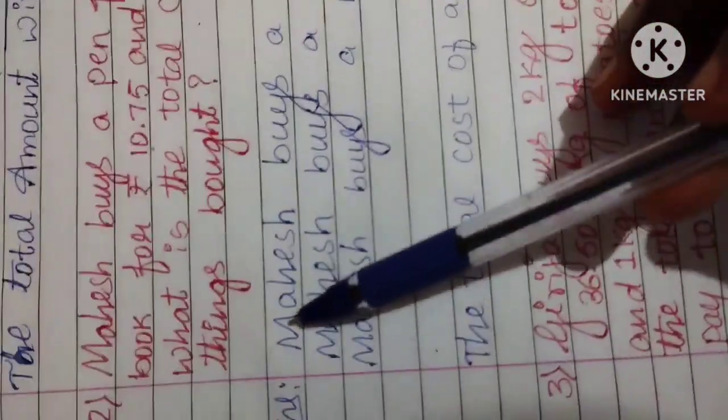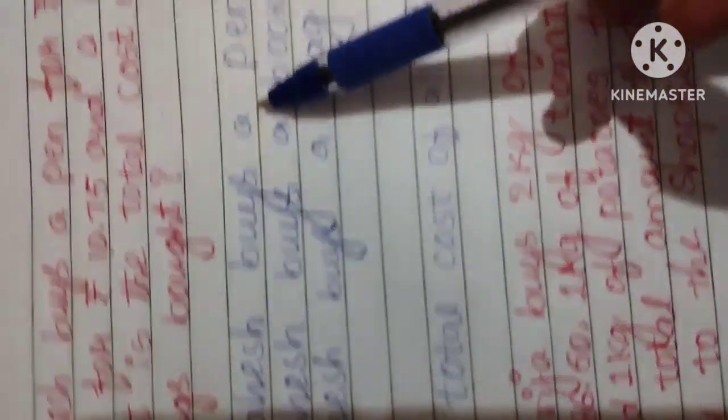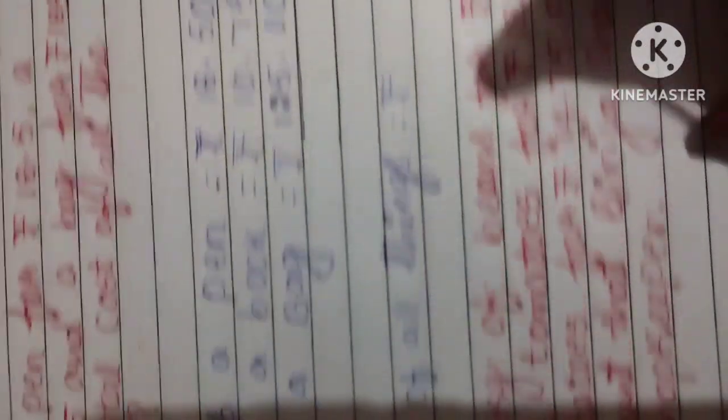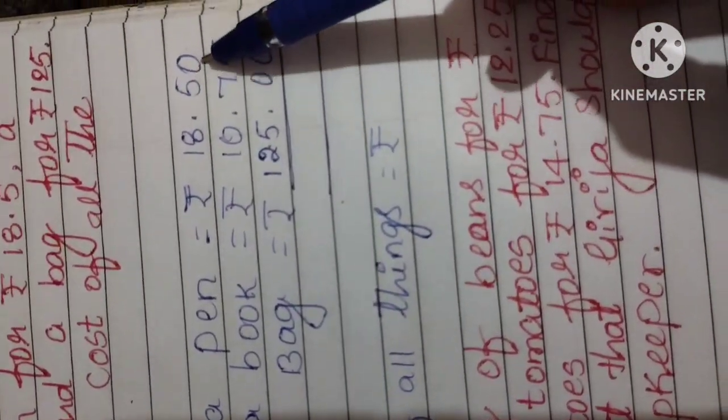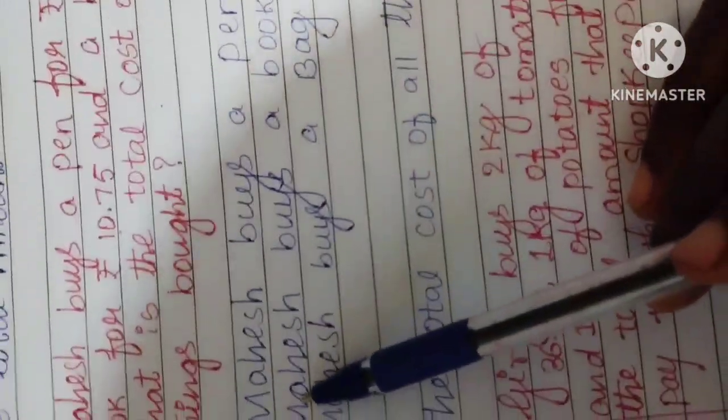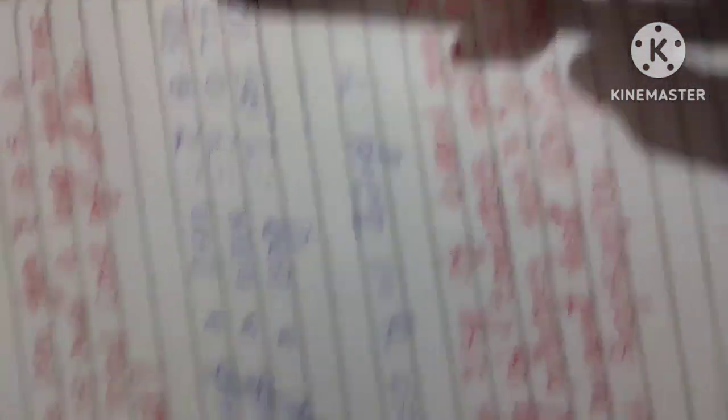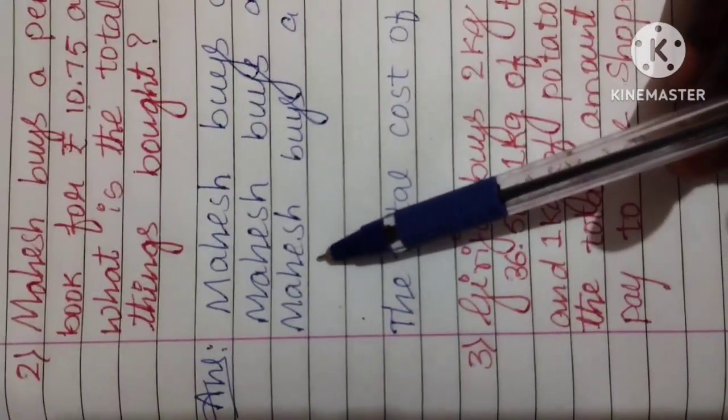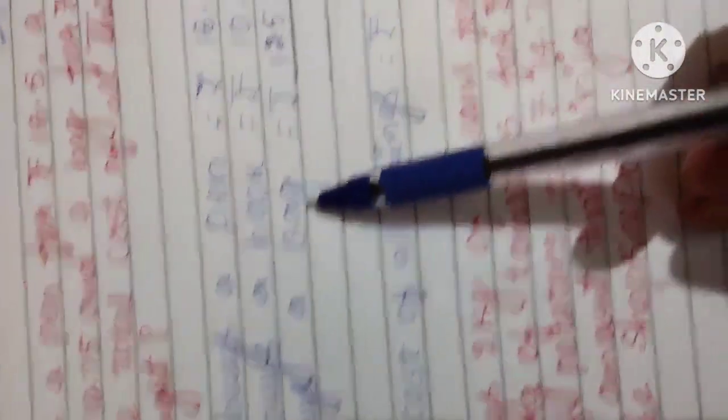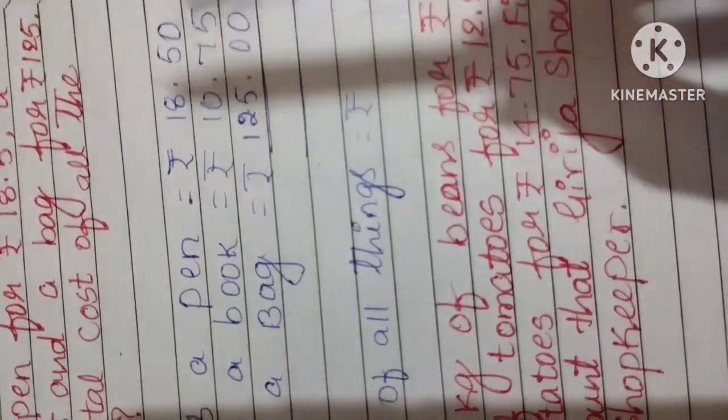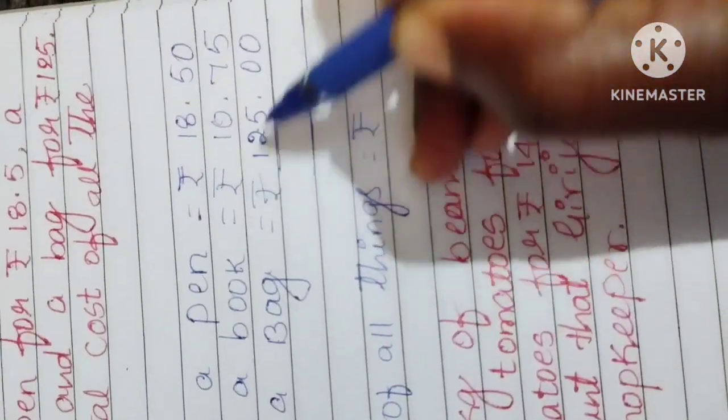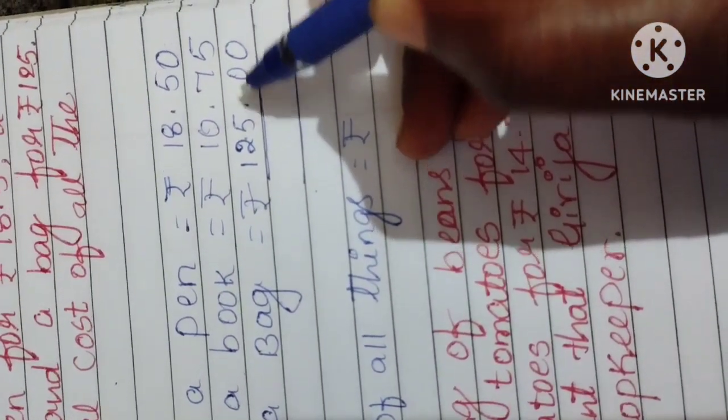You can write now here. Mahesh buys a pen, Rs. 18.55. Then, Mahesh buys a book, Rs. 1075. Next, Mahesh buys a bag, Rs. 125. There is no paise. I had now.